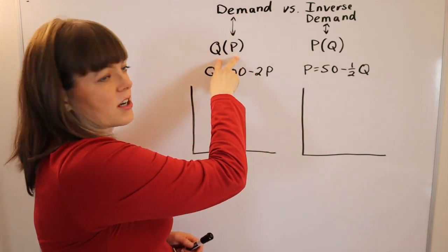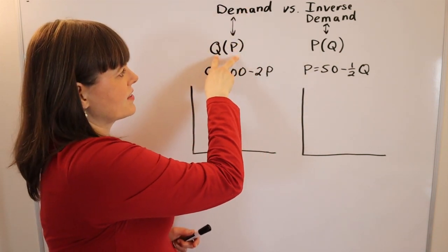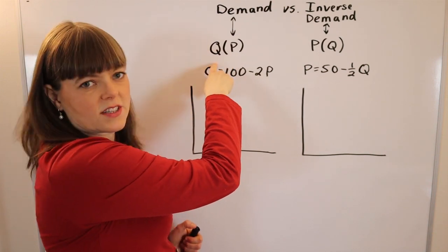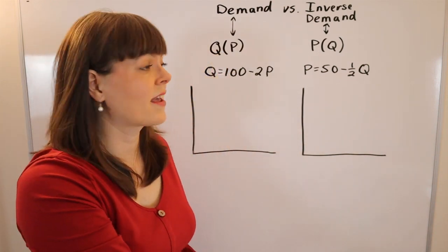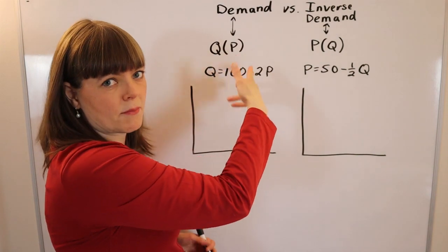So here we have a demand function. And in my opinion, this is way more intuitive that the quantity that people will choose to buy depends on the price that the company sets.